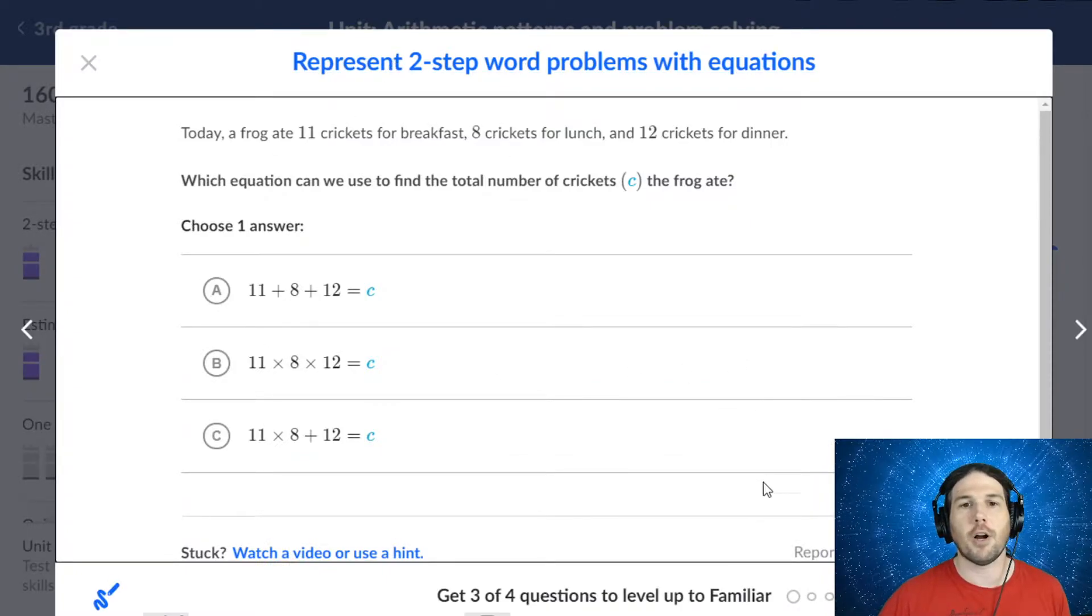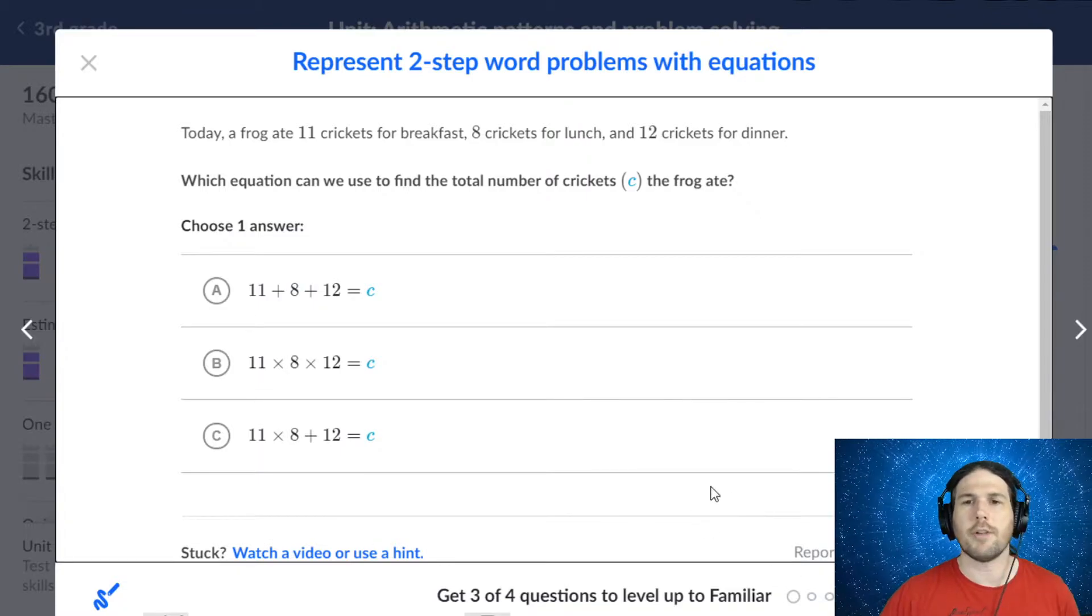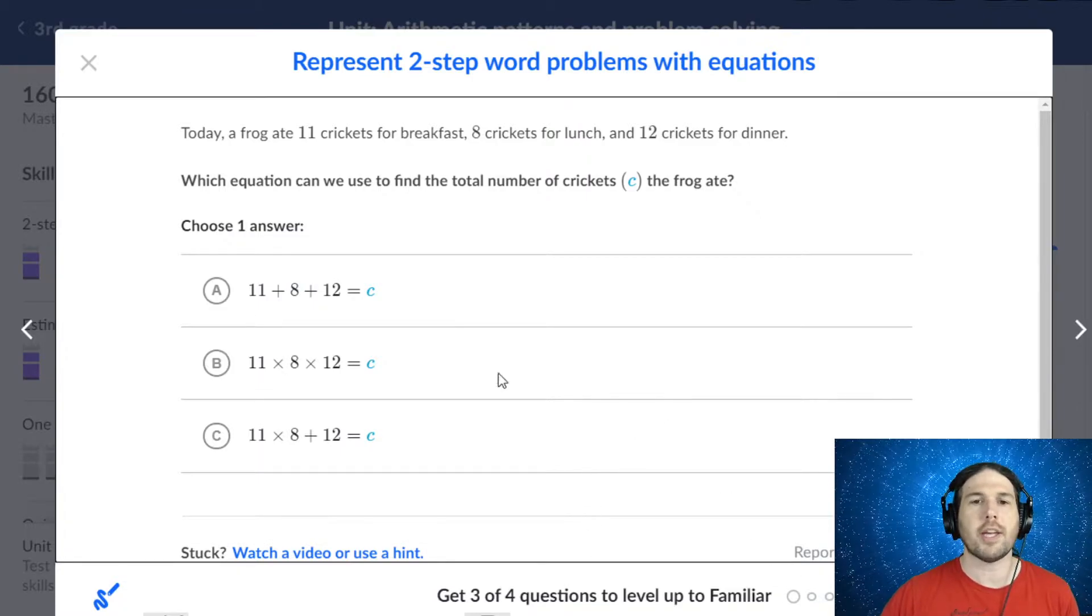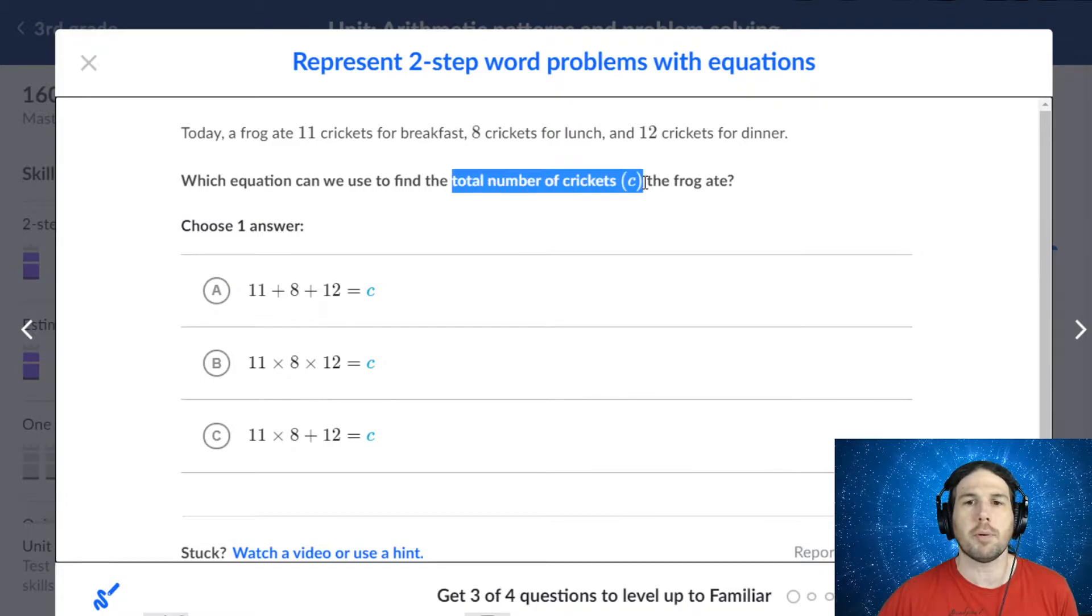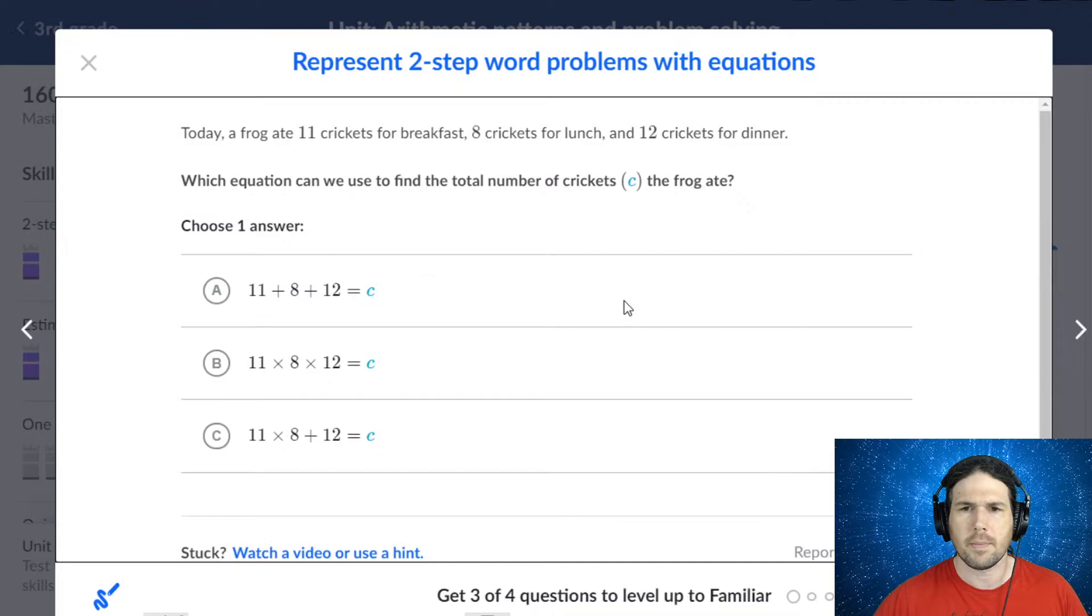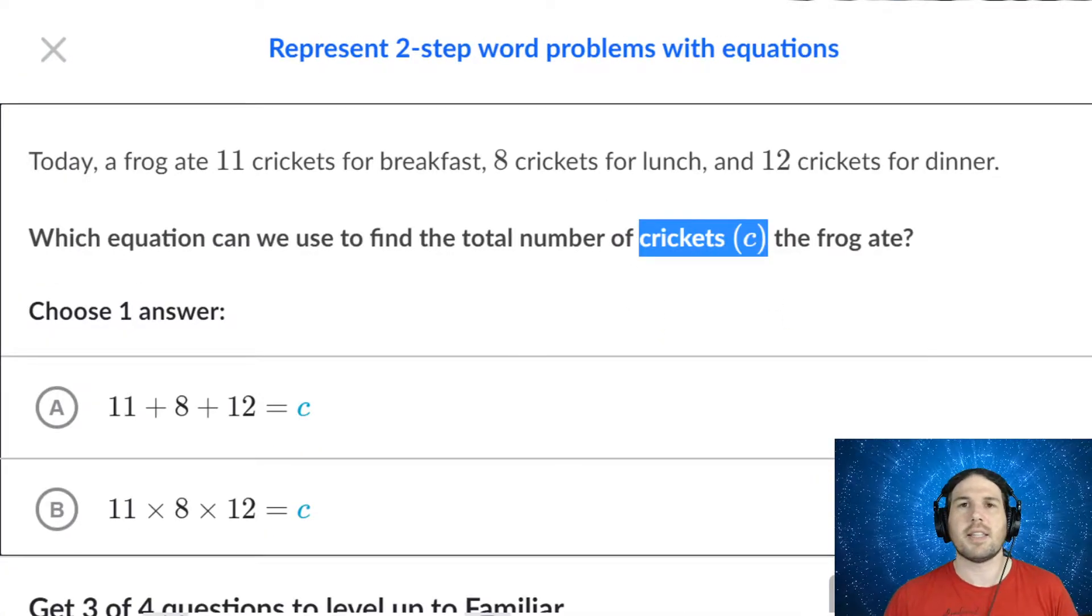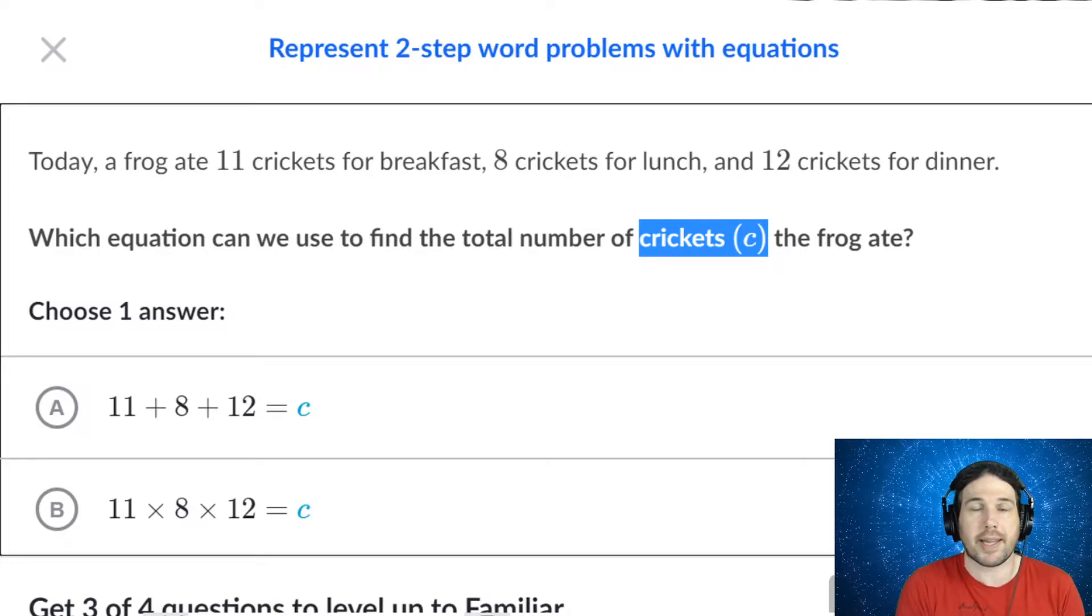Today, a frog ate 11 crickets for breakfast, 8 crickets for lunch, 12 crickets for dinner. Which equation can we use to find the total number of crickets? And then it puts this blue C in parentheses.